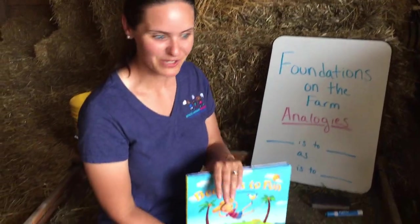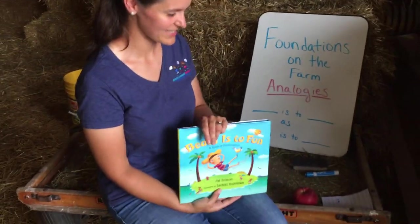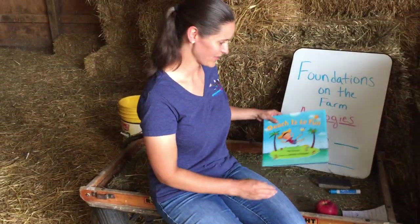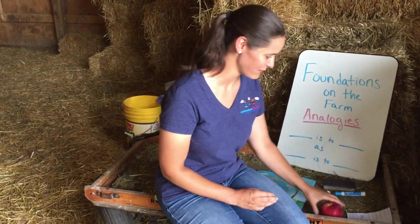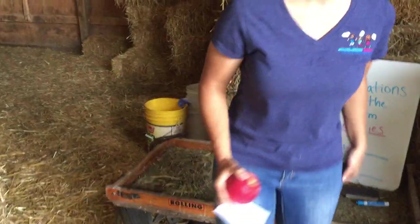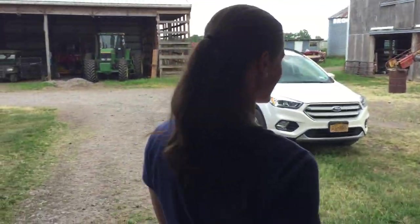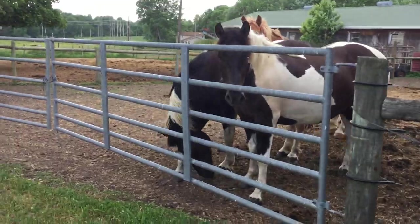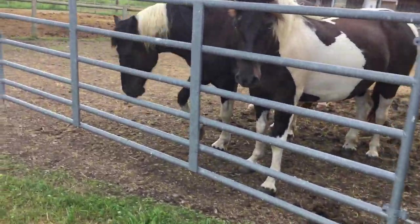That was a fun book of analogies! I think you guys are ready to see some animals now. Let's walk around our farm. We are going to go see some horses first. We have a lot of horses in our pen here waiting for us today, so we're going to go right into their pen.